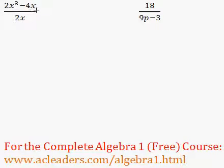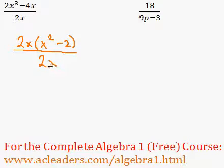right here, 2x cubed minus 4x. We can actually factor out a 2x from the top or from the numerator. So 2x cubed divided by 2x is x squared, and negative 4x divided by 2x is just negative 2. We have that all over 2x.